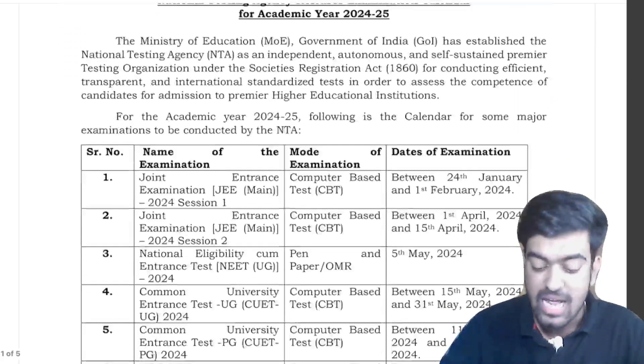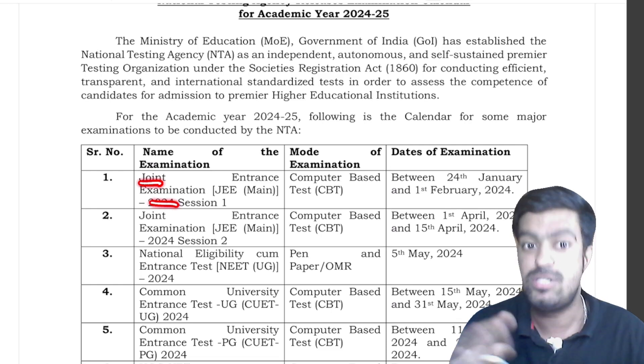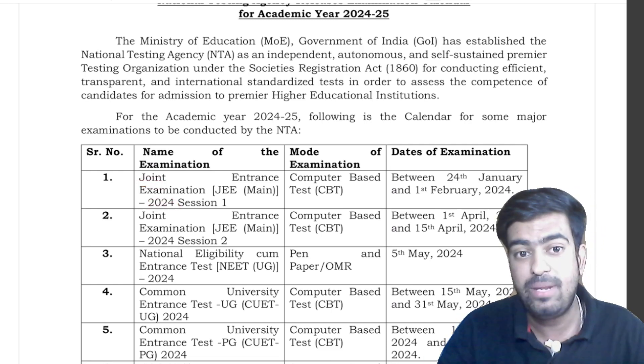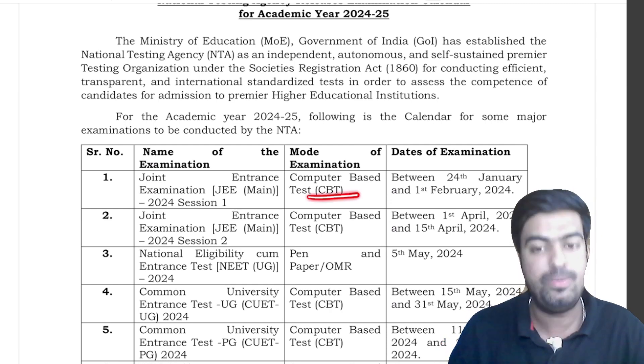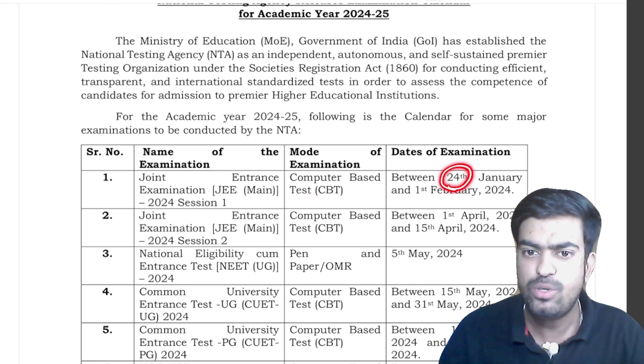First of all, let's go to the date sheets. First we have the Joint Entrance Examinations 2024 Session 1. This examination can be given by those who have mathematics as their subjects and who aspire to become an engineer. The exam is going to take place in CBT mode, which is computer based test, and the date for the examination is 24th January and 1st of February 2024.